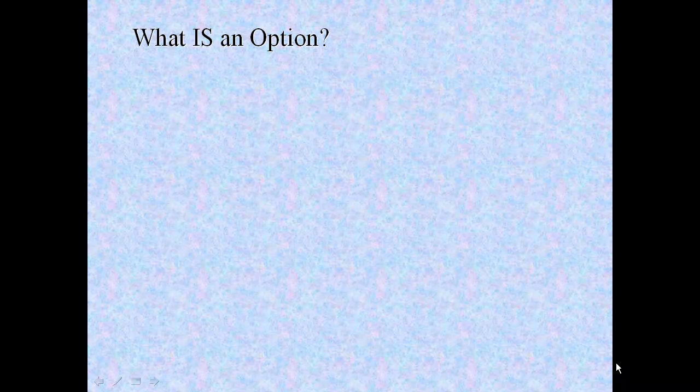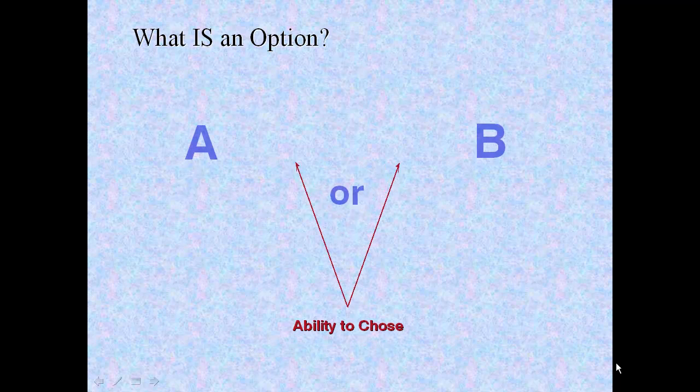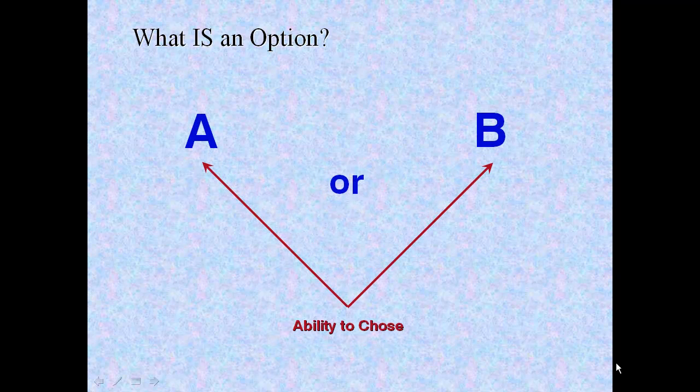An option is not accurately defined by the right to buy or the right to sell. That description is too limiting, especially in the energy business. So then, what is an option? An option is an operating flexibility that allows you to choose between two alternatives. Choose A or choose B. These are called real options.